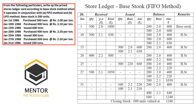On 31st January, we issue 200 units: 100 units from the 2.2 category (220 rupees) and 100 units from the 2.1 category (210 rupees). The remaining balance is base stock of 200 units at 2 per unit (400 rupees) and 400 units at 2.1 per unit (840 rupees). This is the data presentation under Base Stock Method.